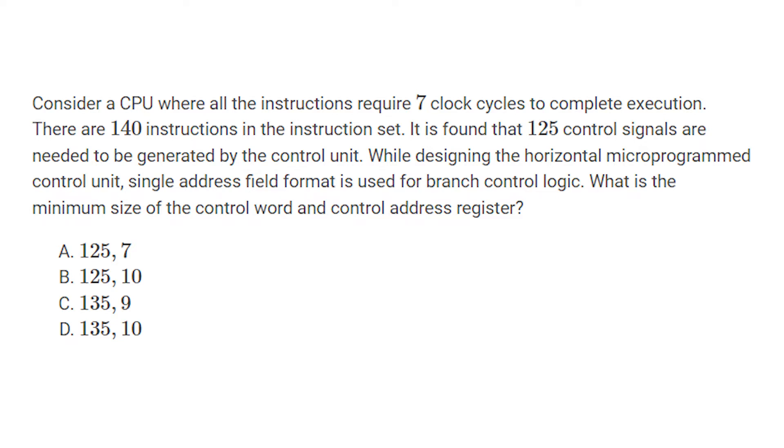There are 140 instructions in the instruction set. It is found that 125 control signals are needed to be generated by the control unit. While designing the horizontal microprogrammed CU, single address field format is used for branch control logic.